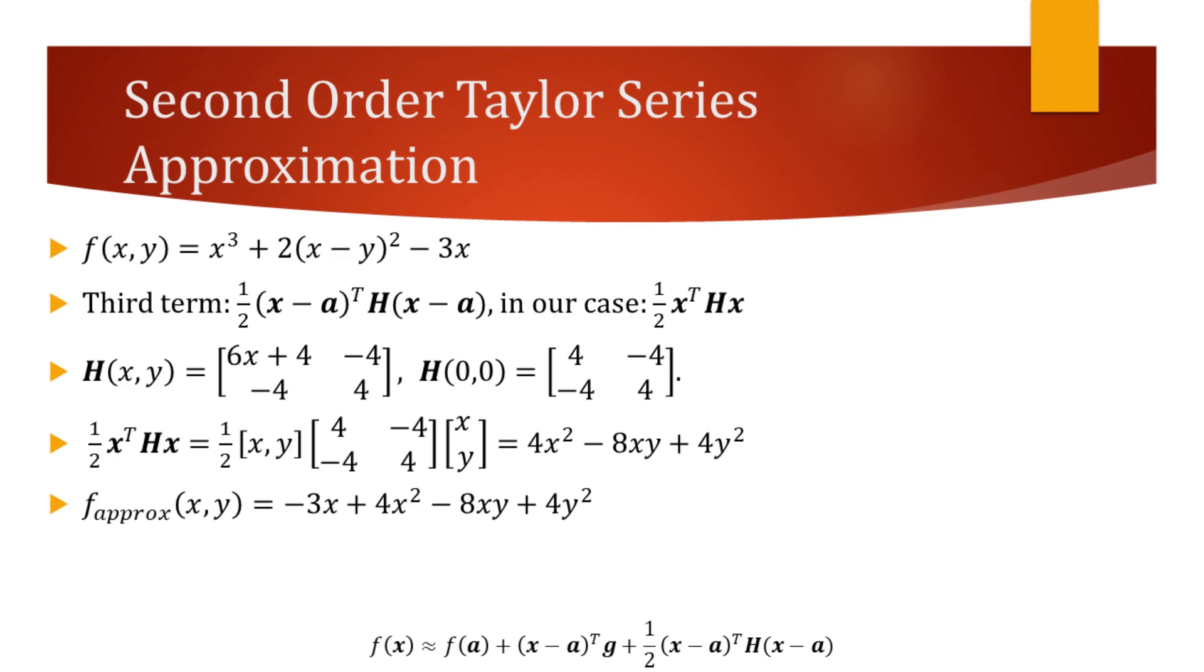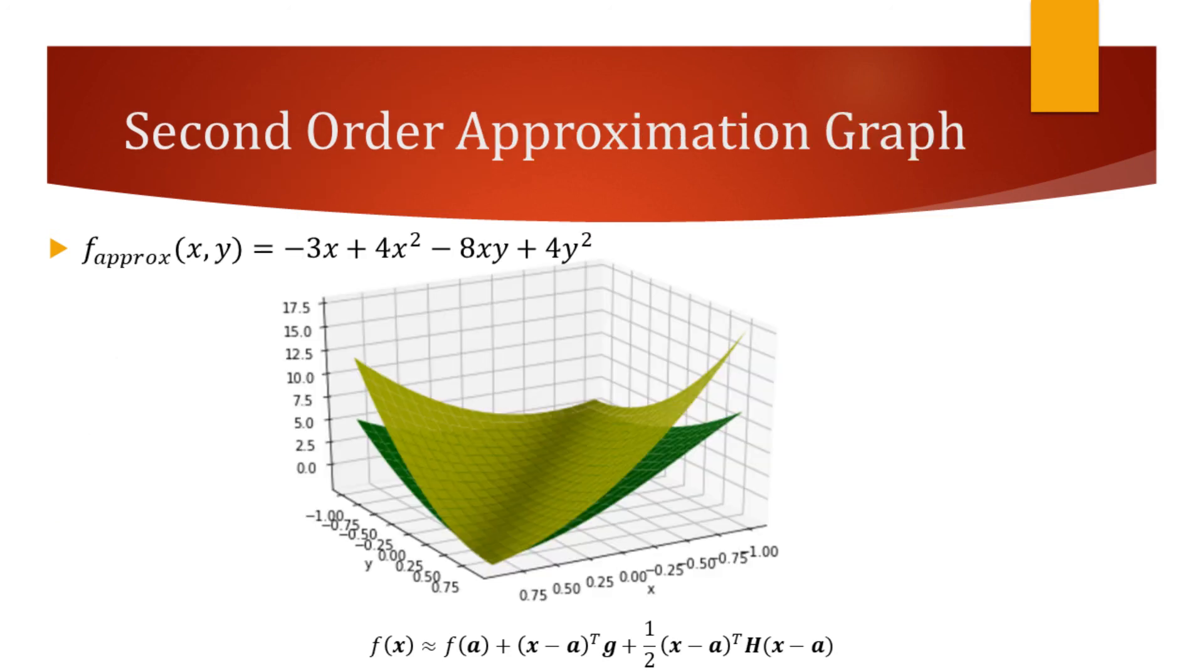Let's now observe how the graph of our approximation has changed. As we can see, our second order approximation very closely resembles the original function at the origin. It captured not only the slope at the origin of the original function, but also its curvature.